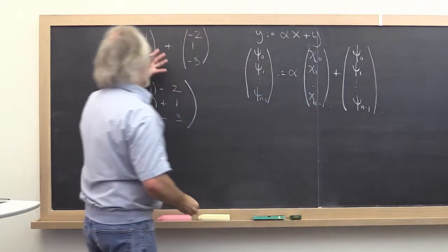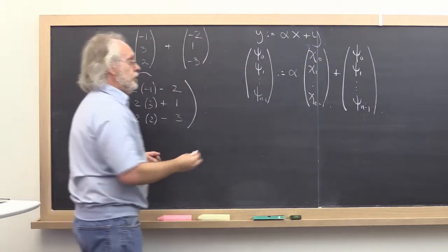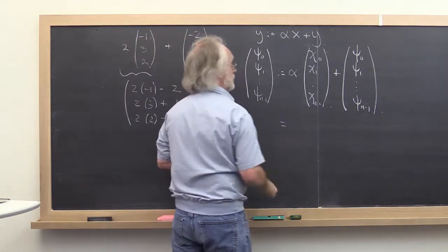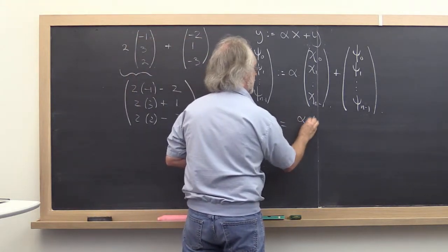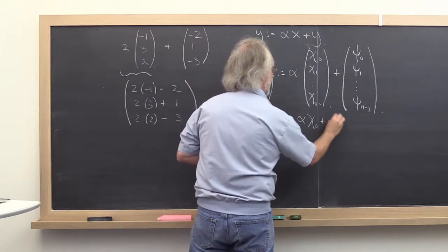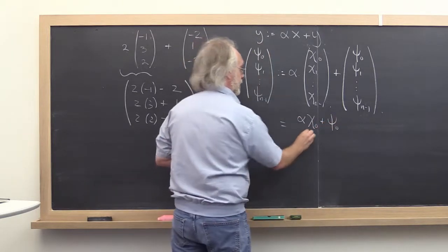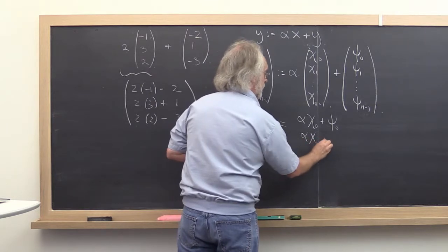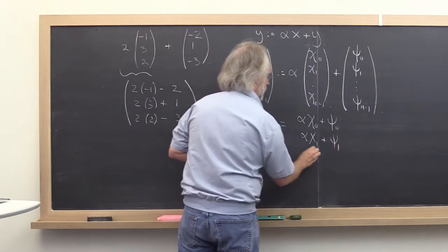And again, taking our cues from this concrete example, we find that the result of that is that you want to multiply the first entry of X by alpha and add that to the first entry of Y, second entries, and so forth.